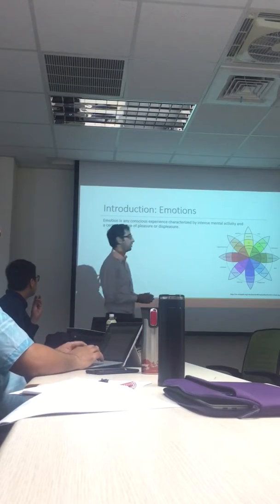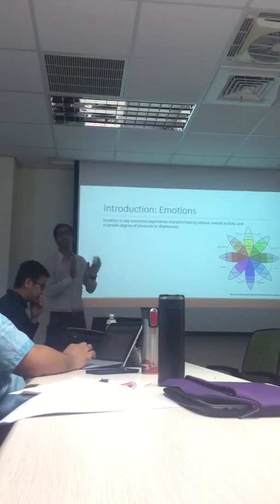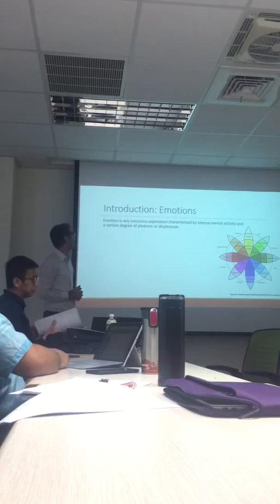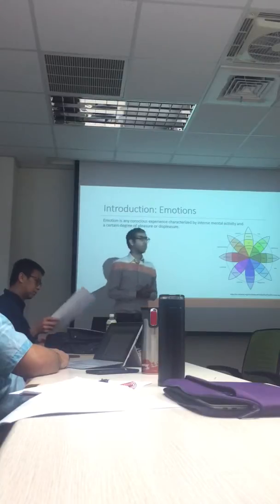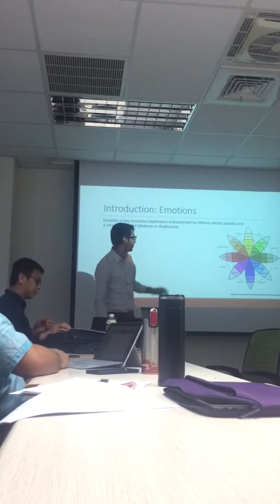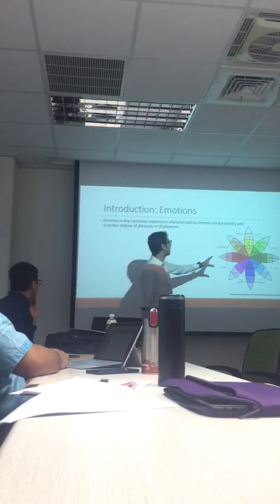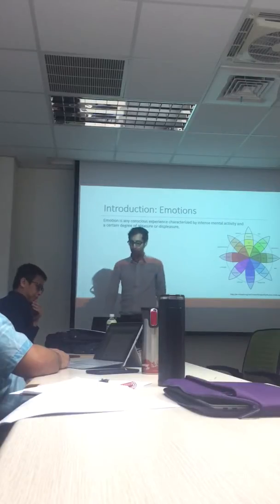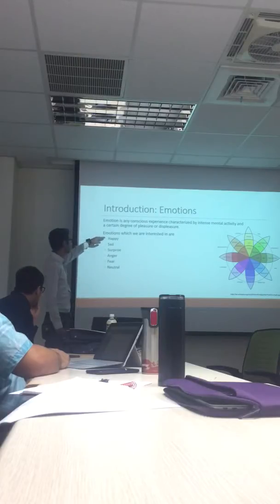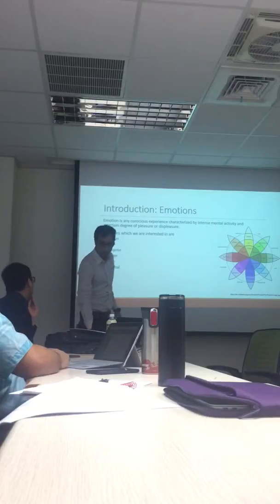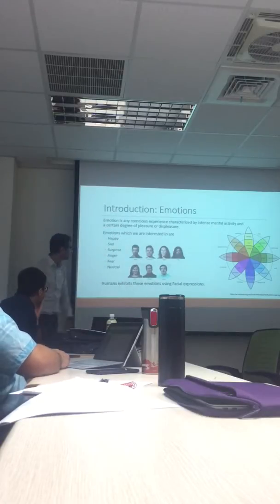First, what are emotions? Emotion is a conscious experience characterized by mental activity and it has a certain degree of pleasure or displeasure. There are many kinds of emotions, but we are interested in seven: happy, sad, surprise, anger, fear, disgust, and neutral. We classify neutral as an emotion category as well.